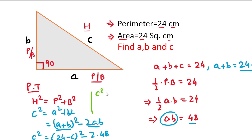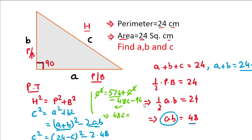Expanding: c squared equals 576 plus c squared minus 48c minus 96. The c squared terms cancel, giving 48c equals 576 minus 96, which is 480. So c equals 480 divided by 48, which is 10. The value of c is 10 centimeters.